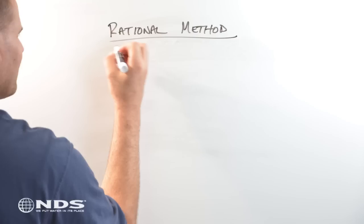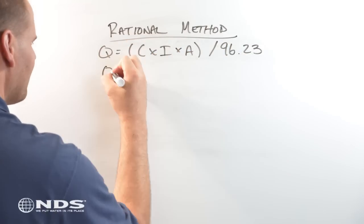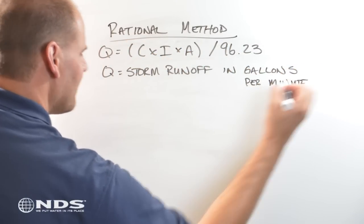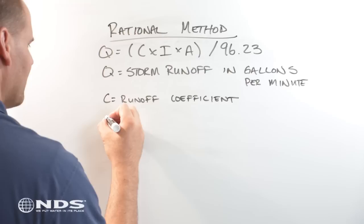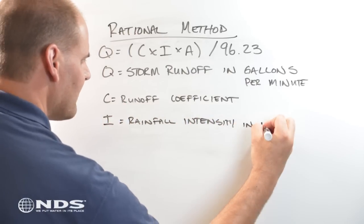The rational method's equation is Q equals C times I times A divided by 96.23. Where Q is the stormwater runoff in gallons per minute,